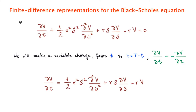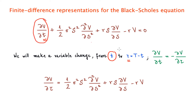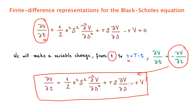The aim is to work with the Black-Scholes equation after making the time variable change from t to tau. Applying the chain rule, the time derivative of V becomes minus the tau derivative of V. Substituting this, we arrive at the equation we will solve numerically in terms of tau, because this way the payoff corresponds to the initial condition in tau. We will then find different finite difference representations for this equation.